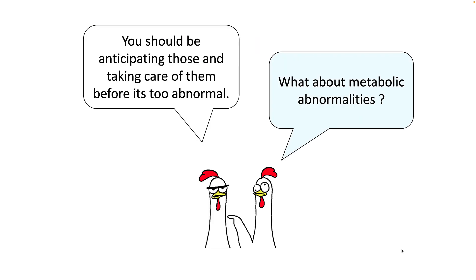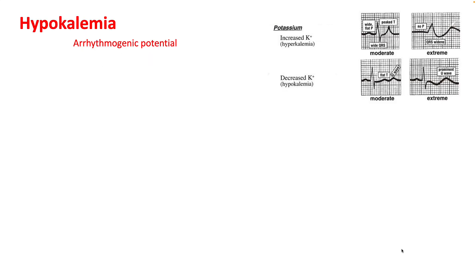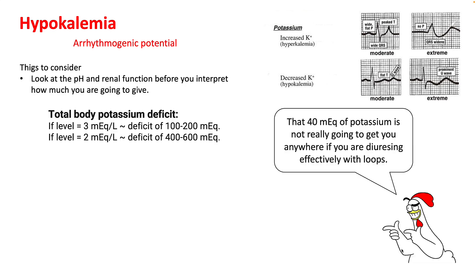Regarding metabolic abnormalities that come with loop diuretics, we should be anticipating these problems and taking care of them before they become too severe. Hypokalemia is the biggest electrolyte abnormality seen in these patients, as it has arrhythmogenic potential in patients with congestive heart failure. Make sure you look at the pH and renal function before you figure out how much potassium to give.